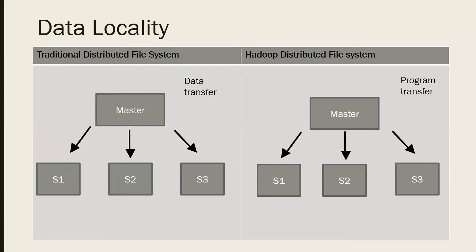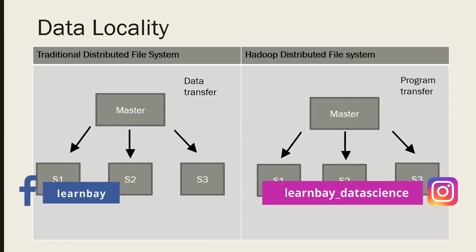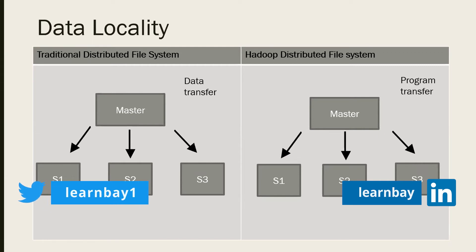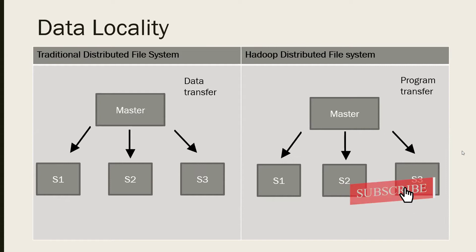Let's understand the difference between Hadoop's distributed approach and traditional ones. Data locality is one key differentiator. In traditional distributed systems, there's a master node and slave nodes. When a client gives a file — say 100 GB — the master reads it, splits it, and stores portions on the slave nodes. After storage, slaves acknowledge back to the master. When the client submits a program to run on the 100 GB, the master tells all slave systems to send the data back to the master for processing.